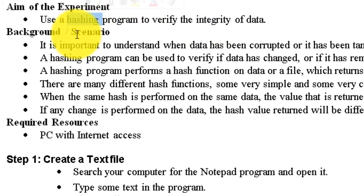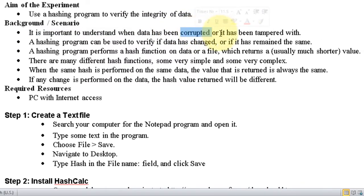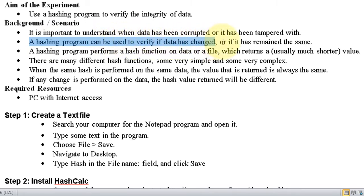We will check using a hashing program. It is very important to understand when data has been corrupted or when data has been tampered. If anybody tries to change or modify the data, this program will help a lot. Hashing functions can be used to verify if data has changed or if it has remained the same.